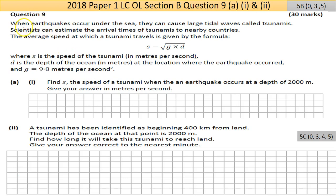Question 9 here, let's go through slowly. When earthquakes occur under the sea, they can cause large tidal waves called tsunamis. Scientists can estimate the arrival times of tsunamis to nearby countries. The average speed at which a tsunami travels is given by the formula: speed equals the square root of g times d, where g is the force of gravity on Earth and d is the depth of the ocean.